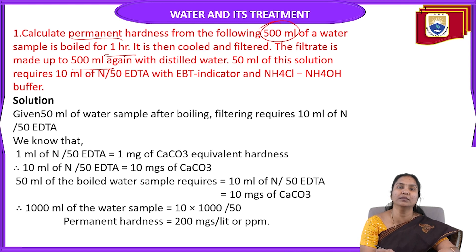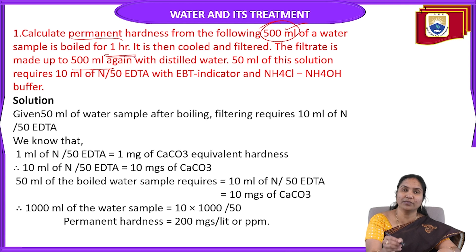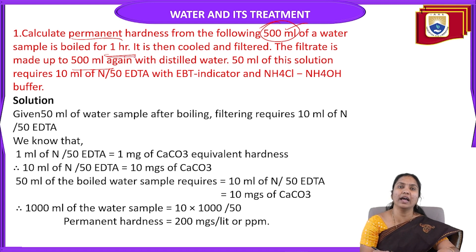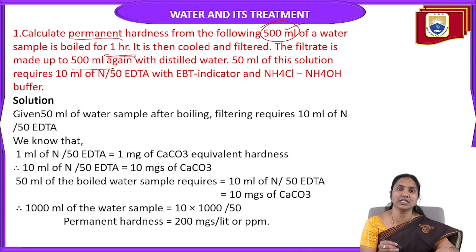In this case we can calculate the permanent hardness of water. The volume of water given is 500 ml. By boiling, we remove the temporary hardness from this water — that is the purpose of boiling for 1 hour. The water is then cooled and filtered. The filtrate is made up to 500 ml again with distilled water, so the total volume of this solution is 500 ml.